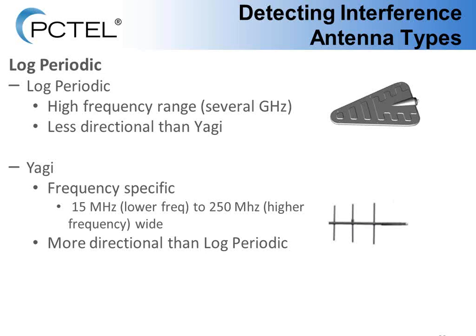You also have to decide on antenna type. A log periodic antenna has a high frequency range covering several hundred MHz up to 5–7 GHz, but is less directional than a Yagi. A Yagi antenna is frequency-specific — at lower frequencies it may have only a 15 MHz bandwidth, while at higher frequencies it might be 100–250 MHz wide — but it is more directional, giving better accuracy in finding the direction of the interferer. The tradeoff is you need a different Yagi antenna for every band you want to test.